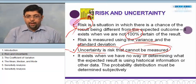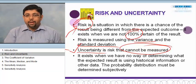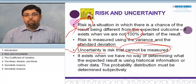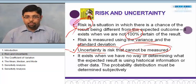It exists when we have no way of determining the expected value, so we have no past information. We don't know where we are heading into and what might be the result or the outcome. That's uncertainty.